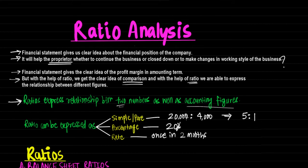There are three major types of ratios: first is balance sheet ratios, then revenue ratios, and third combined ratios. We would start with balance sheet ratios first.